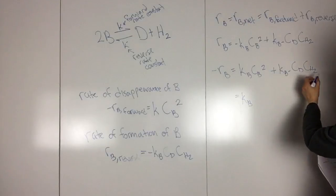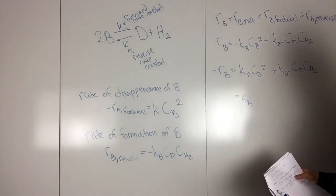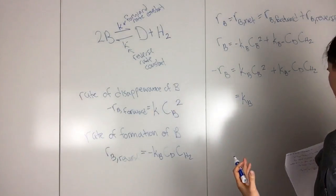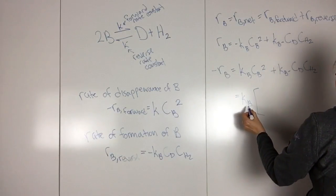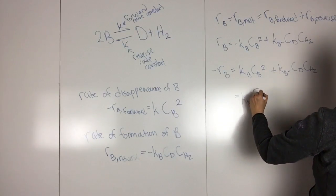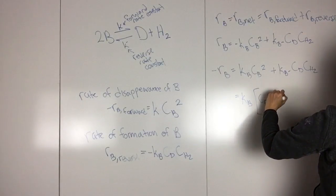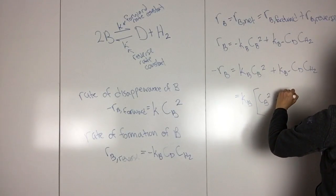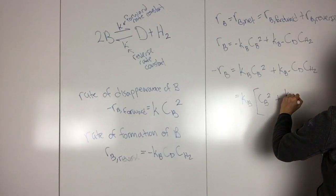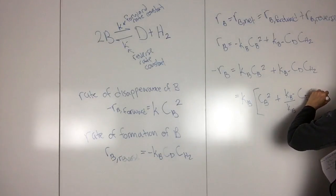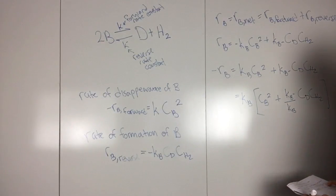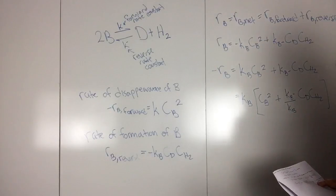So technically this would be your rate law, but these have a certain way that they're normally written, so I'm going to continue and write it that way. Pulling KB out, we get CB squared plus KB minus over KB CD CH2.